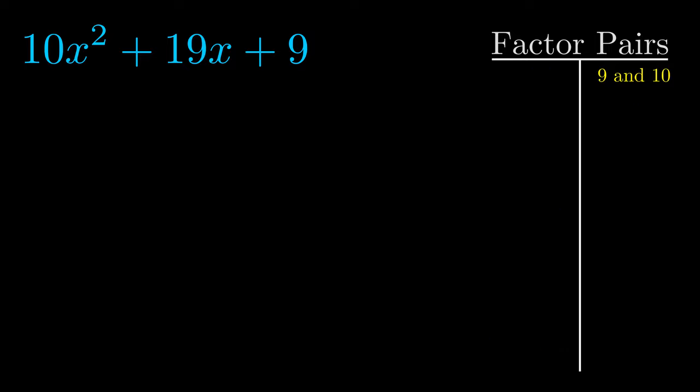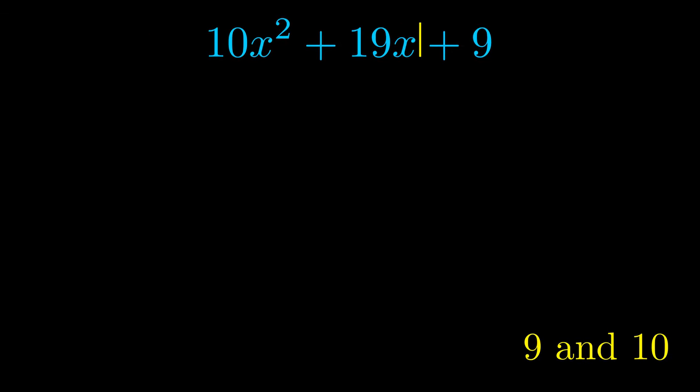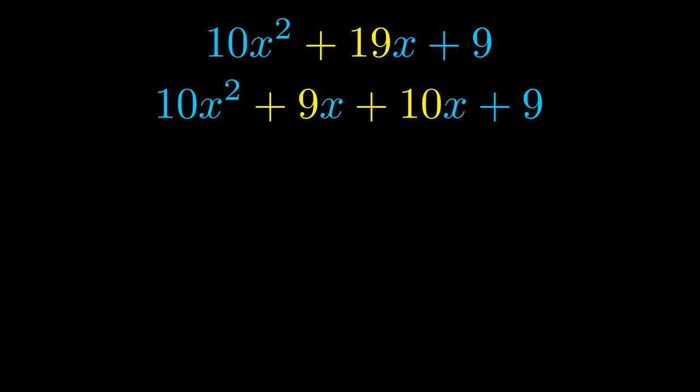Now once we have this factor pair, what we want to do is use it to split up the b value. Notice how I'm going to keep my first term and my last term completely unchanged. It is only this b term highlighted in yellow that gets expanded into this correct factor pair.